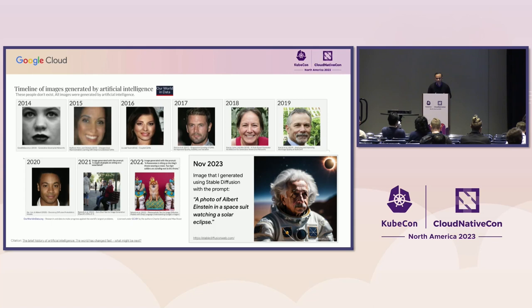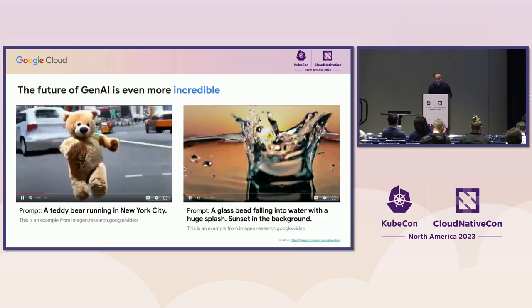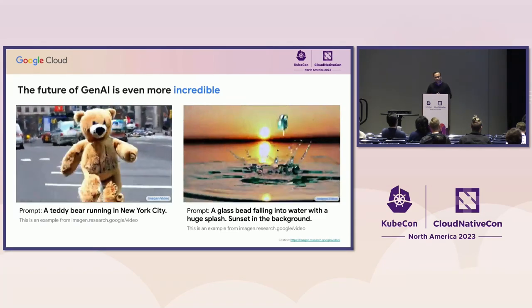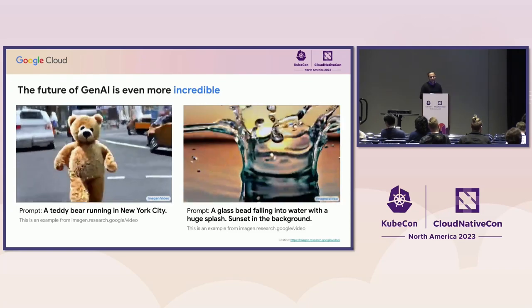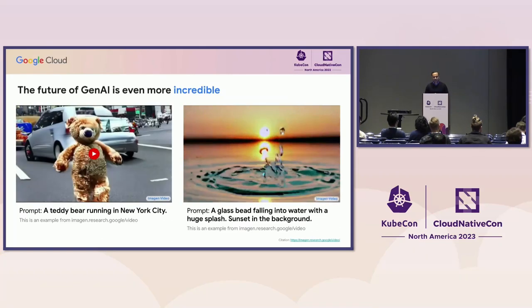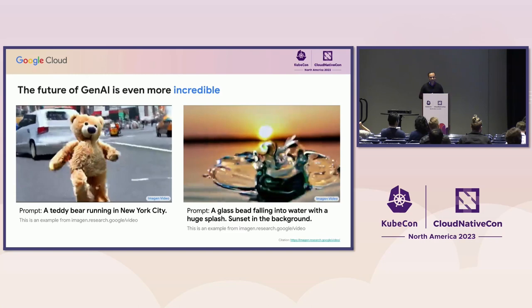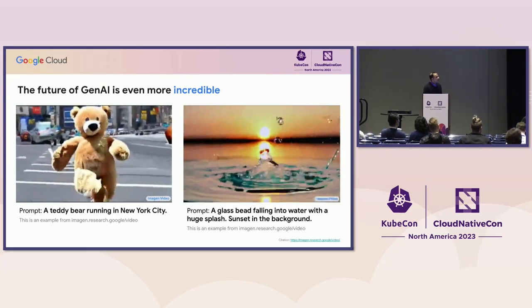By 2021, we started to see text-to-image generation — capabilities with prompts that many of you might have tried. Just last week, I used Stable Diffusion to generate a very realistic image of Albert Einstein in a space suit at the time of a solar eclipse, perhaps gathering experimental evidence to prove general relativity. The future of gen AI is even more incredible, with Google research teams showing accurate and realistic video clips generated by text prompts — a teddy bear running in New York City, a glass bead falling into water with a splash at sunset.